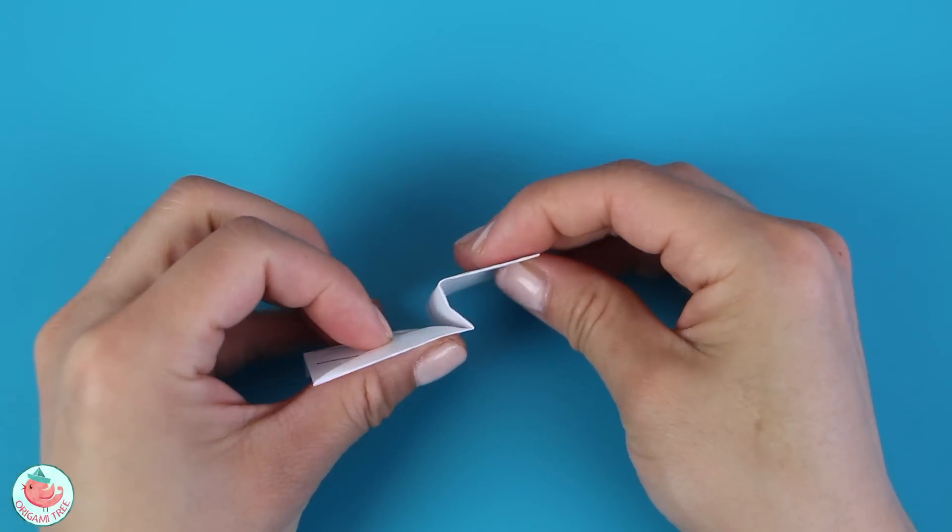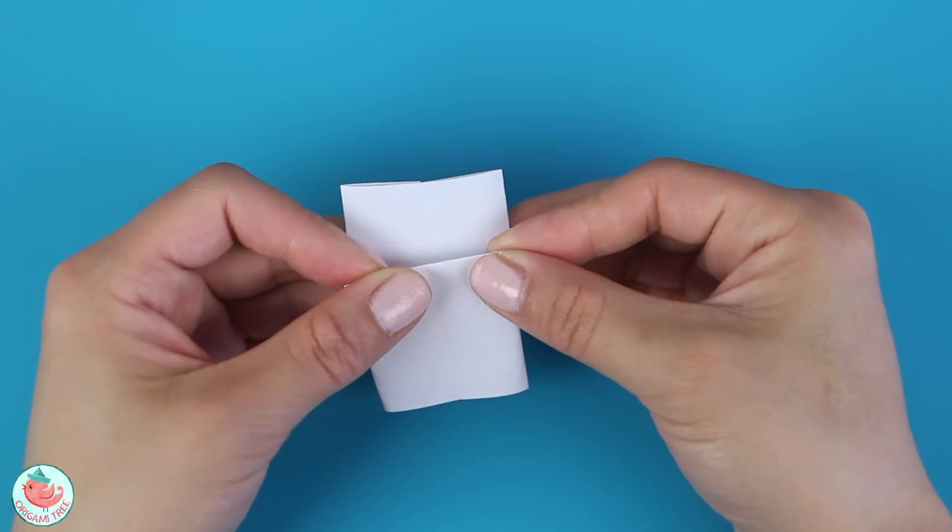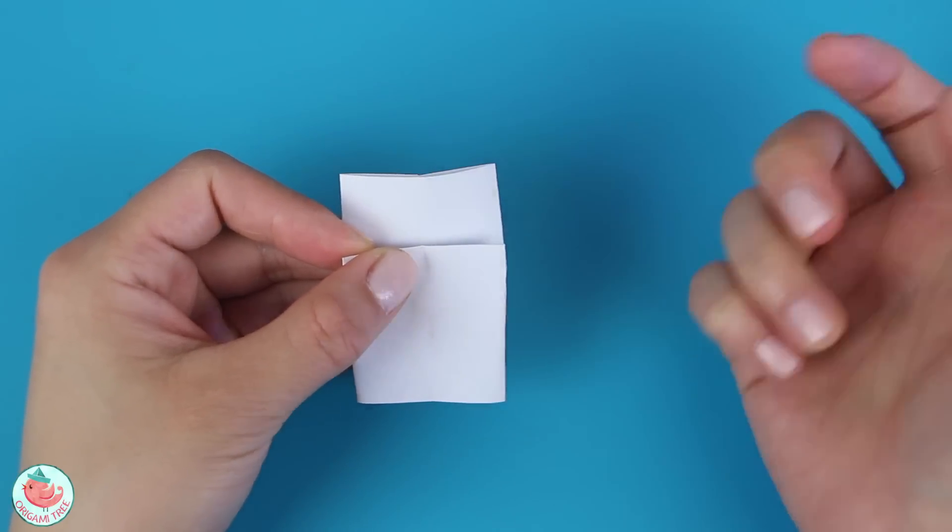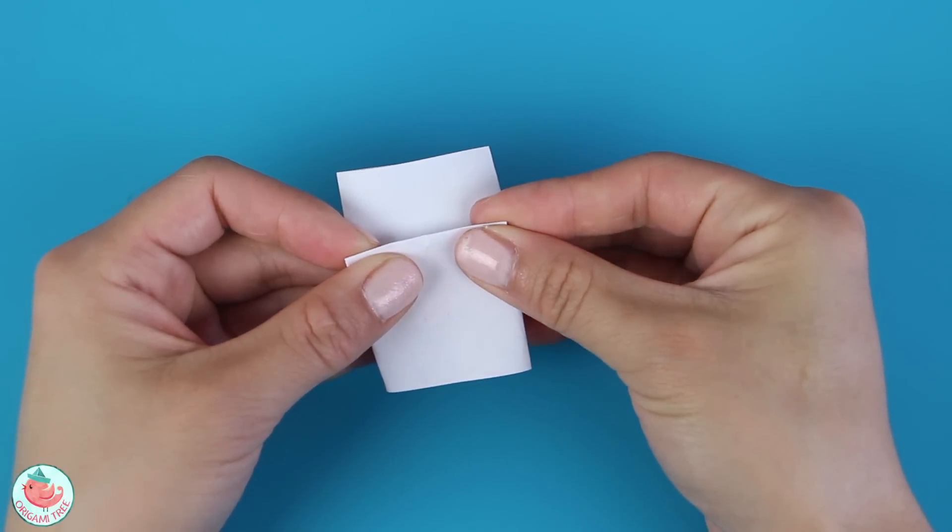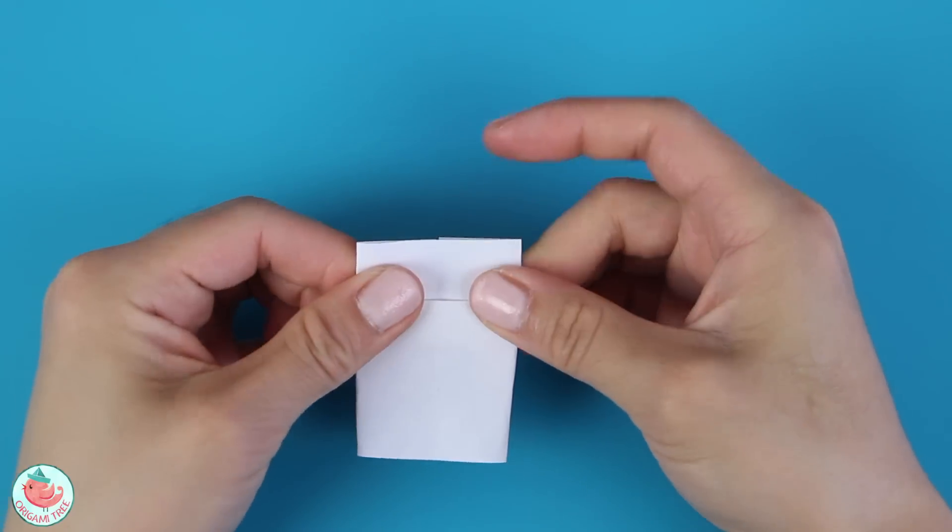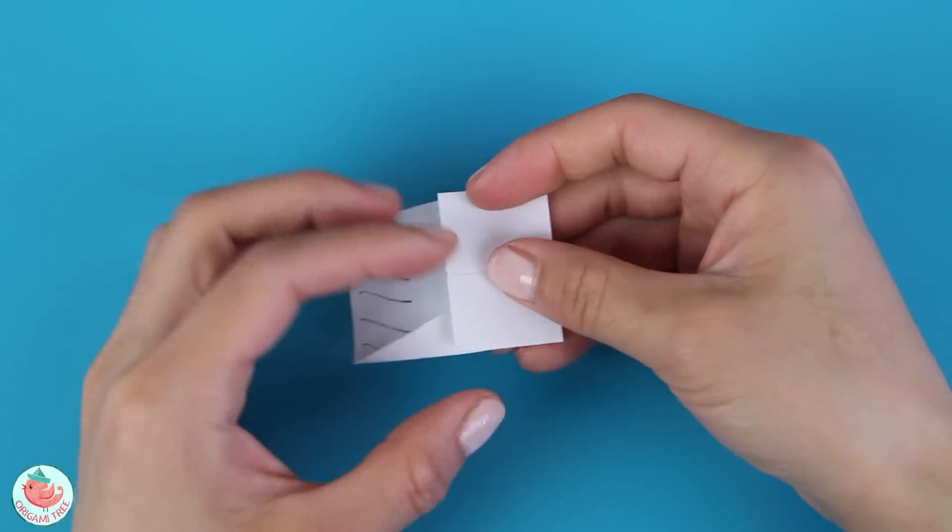So from the side, it should look like this little S or zigzag shape. And now you want to gauge how high you want his head to be. So I kind of want him to have a little short head and a big fat body. So I'm going to fold it up to here and then crease it in. And from the side, it should look like a zigzag. Now you want to flip the whole thing over.